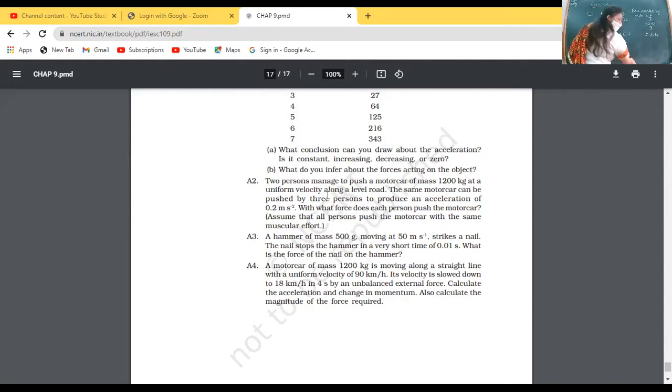A3: A hammer of mass 500 grams moving at a speed of 50 meter per second strikes a nail. The nail stops the hammer in a very short time of 0.01 second. So initial velocity was U and final velocity 0 - the hammer stops. What is the force of the nail on the hammer? Which formula? Second law.